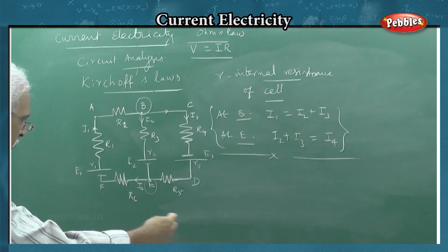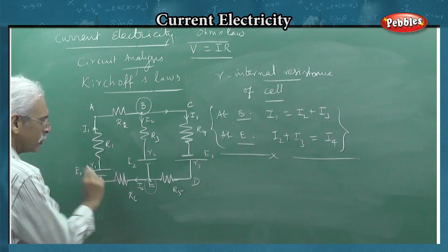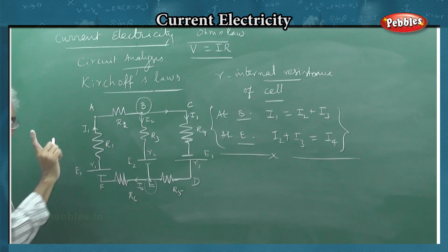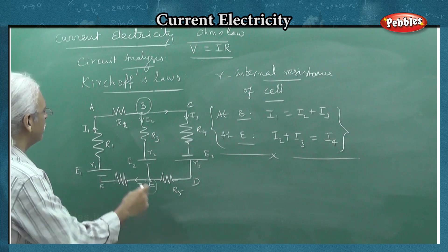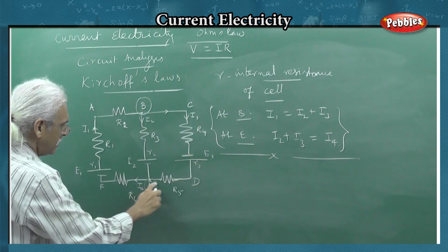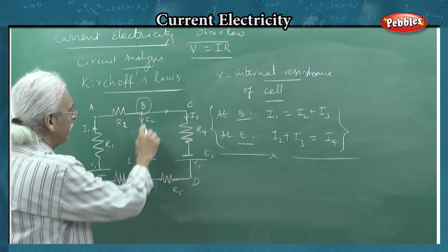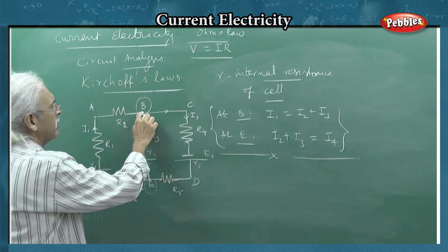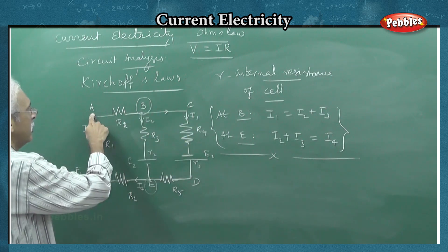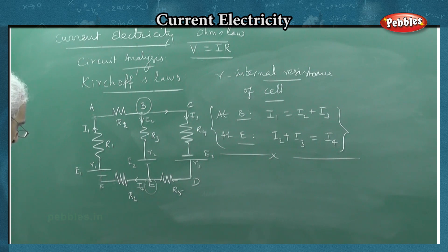Now for the voltage law — the loop rule. We will demonstrate how to apply it to a closed loop. There are three closed loops in the circuit. Loop one: A, B, E, F, A. Loop two: A, B, C, D, E, F, A — the larger closed loop. Loop three: B, C, D, E, B. In a closed loop, you return to the same junction you started from.